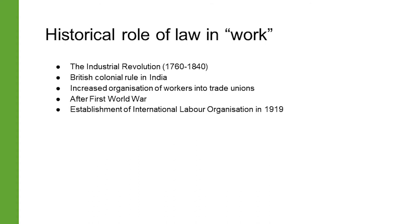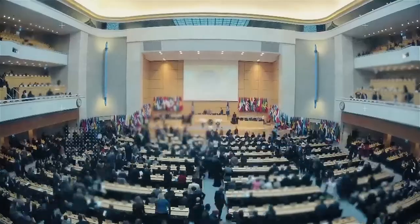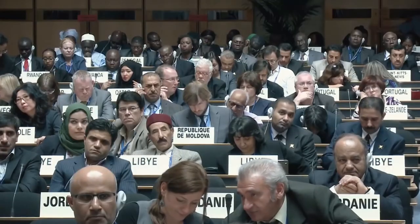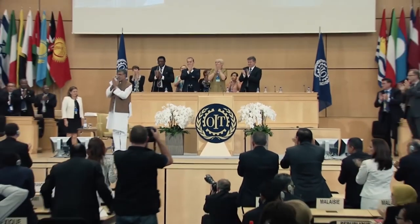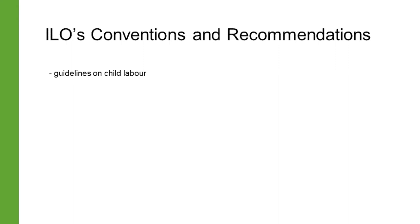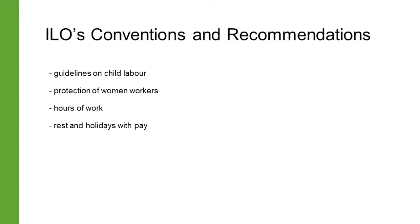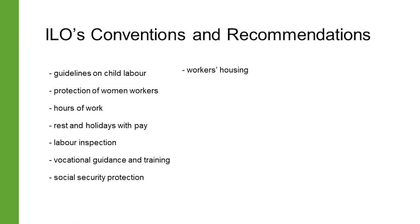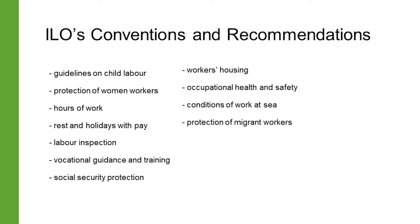Another important development happened in the sphere of international law. The International Labor Organization was established soon after the First World War, with membership from national governments, employers, and workers' associations. Among its main achievements was the adoption of international standards called conventions and recommendations for implementation in member states. These conventions and recommendations contain guidelines on child labor, protection of women workers, hours of work, rest and holidays with pay, labor inspection, vocational guidance and training, social security protection, workers' housing, occupational health and safety, conditions of work at sea, and protection of migrant workers.